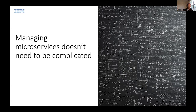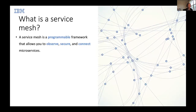Service mesh really came in to help users solve the problem of managing microservices. Service mesh helps users standardize the way microservices connect to each other, the way they secure each other, and helps platform owners enforce policies on microservices. So service mesh is fundamentally a programmable framework that allows you to observe, secure, and connect microservices — and most importantly, to do it consistently, so that from different services you have a consistent point of view.